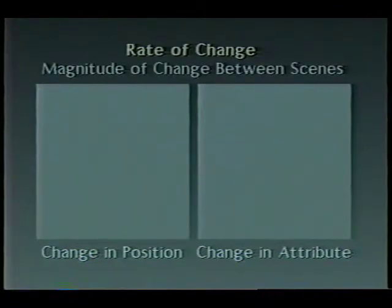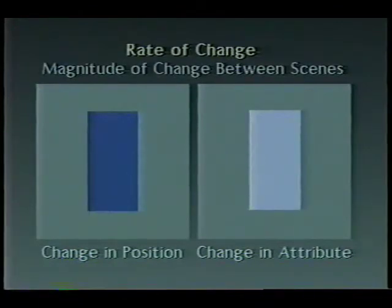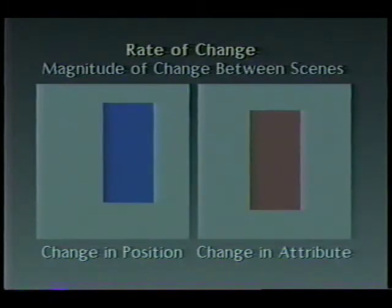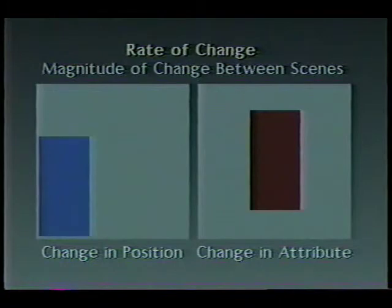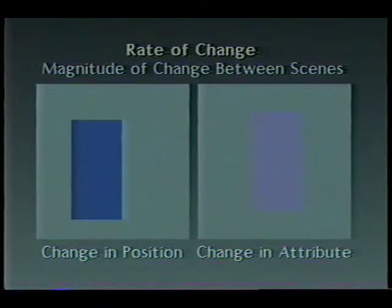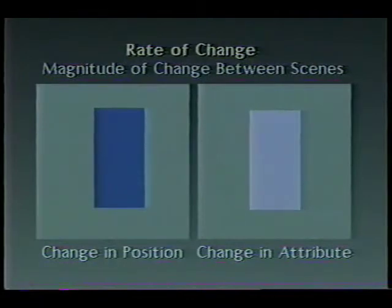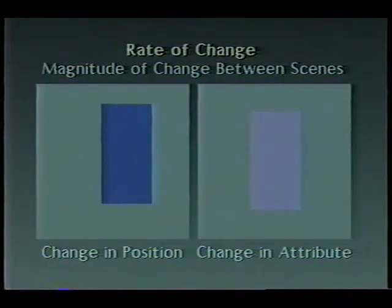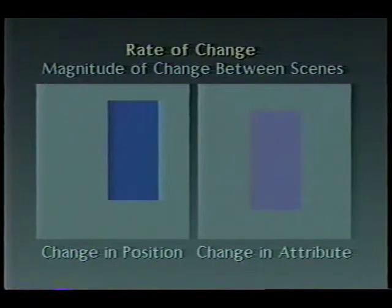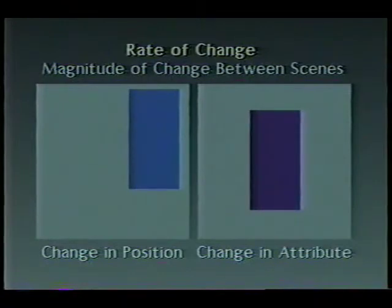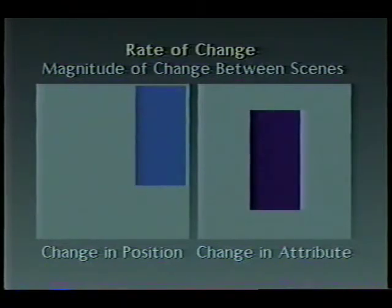Now let's consider the effect of varying the magnitude of changes between scenes while holding duration constant. Increasing the magnitude of change between scenes results in a choppy sequence, which may be appropriate for representing discontinuous events. Decreasing the magnitude of change in position makes the change appear more smooth. The apparent velocity of the sequence is slower because more scenes have been added while maintaining constant duration.